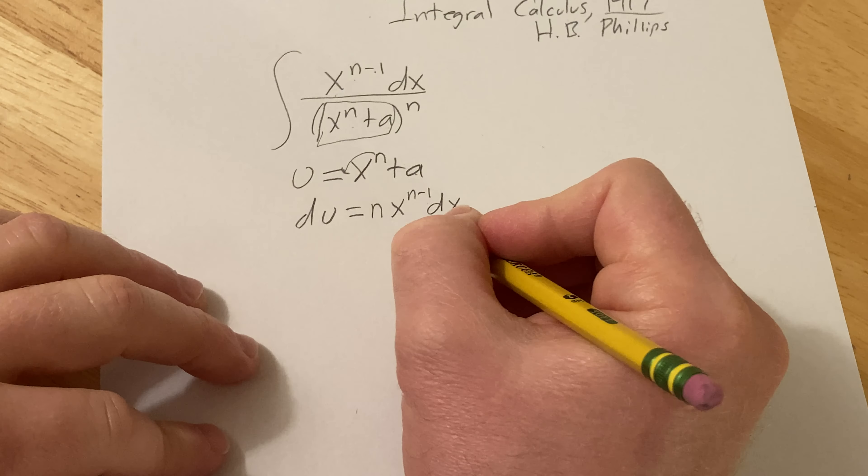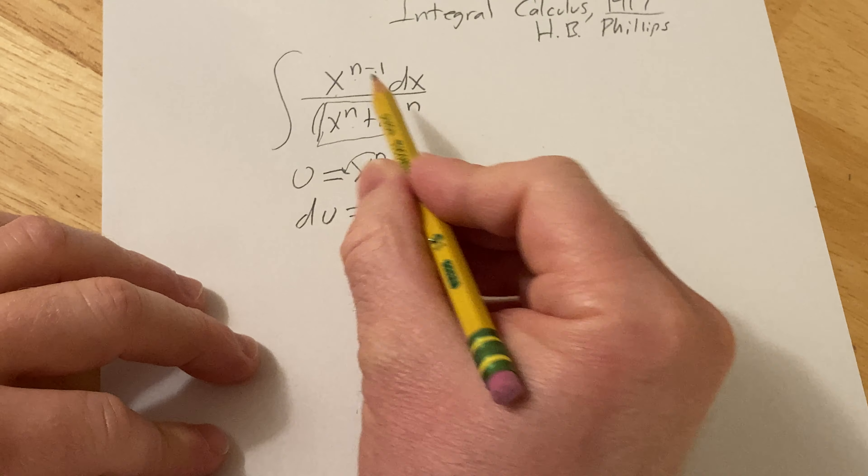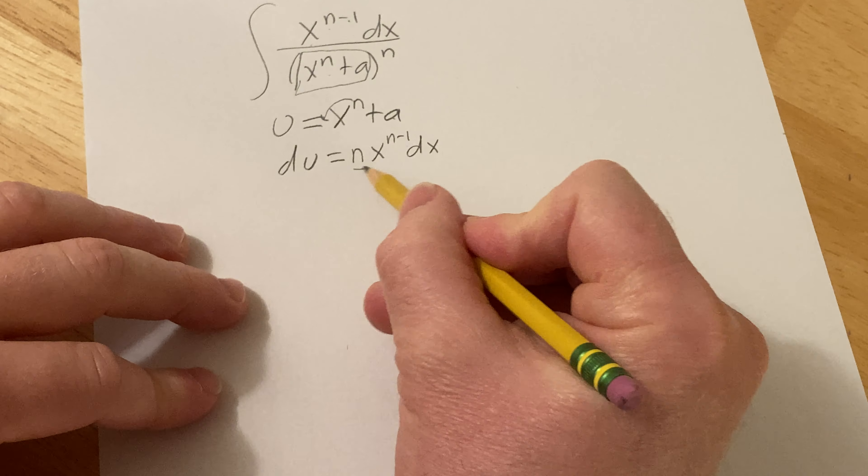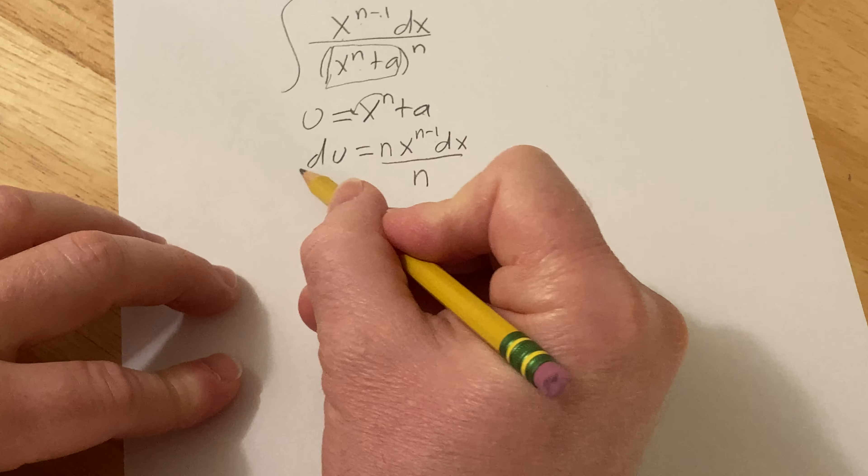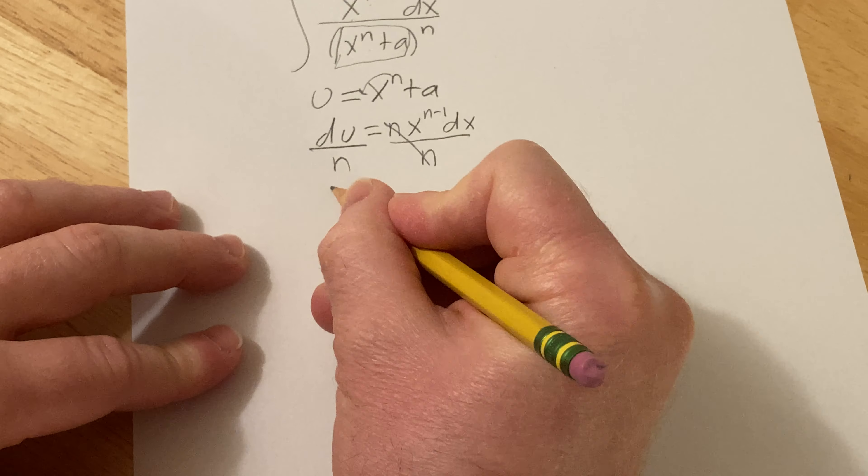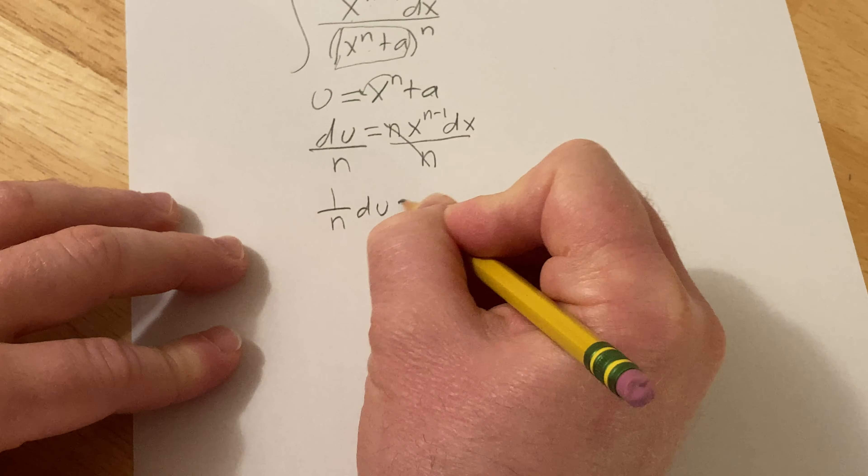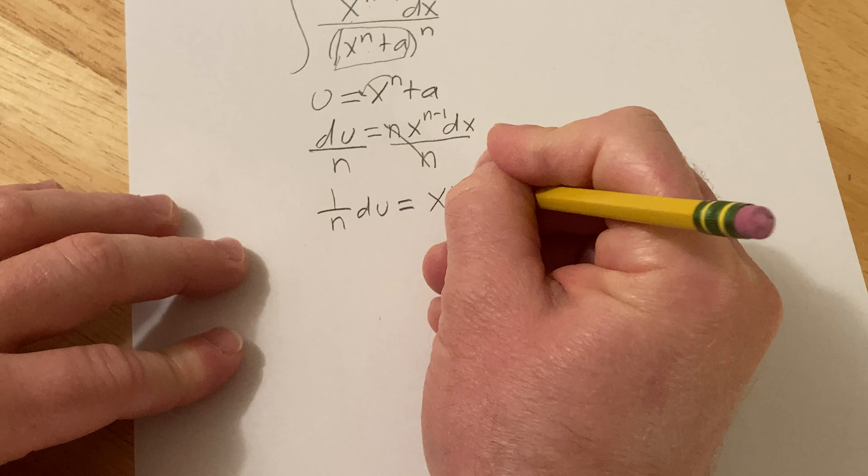Now we have to make what we have here look like what's in the integrand. So we're missing an n here. So let's just divide away that n. So this is 1 over n du equals x to the n minus 1 dx.